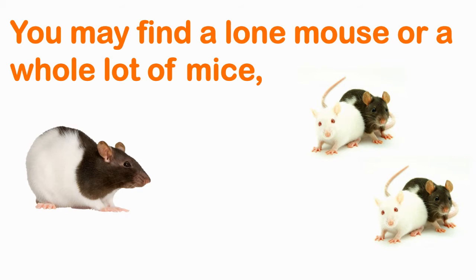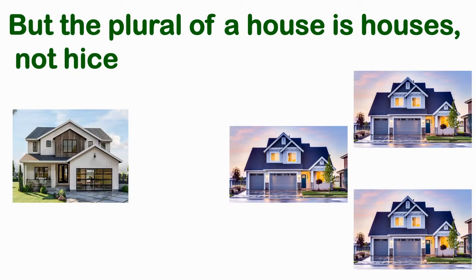You may find a lone mouse or a whole lot of mice. Lone mouse means one mouse — if it is one, we call it mouse. But when there are many, we call it mice. But the plural of house is houses, not heist. So house is singular, and its plural is houses. If mouse is mice, then why is house not heist?